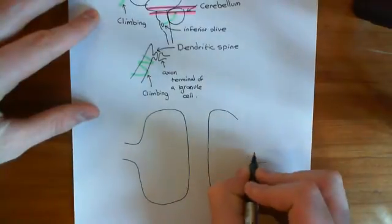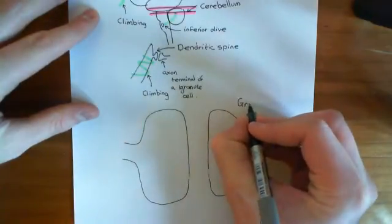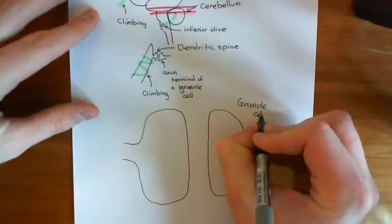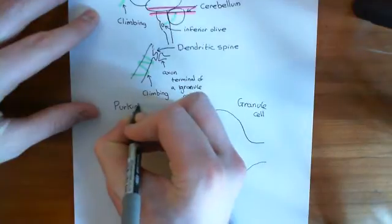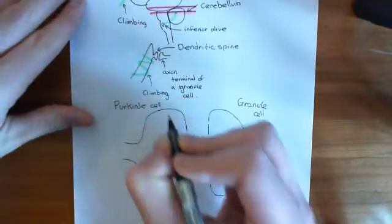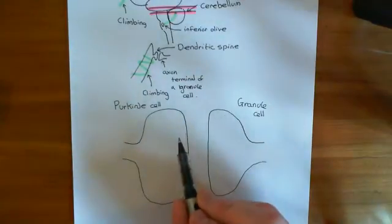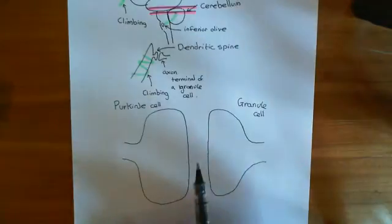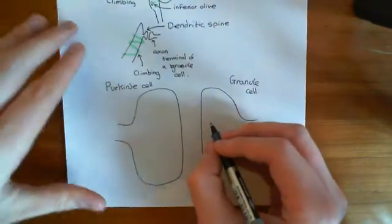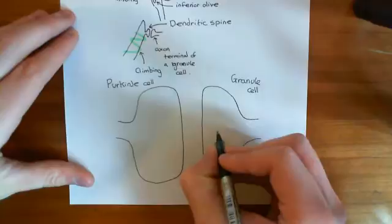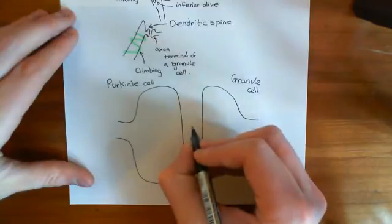The axon terminal of this granule cell is going to release glutamate. So this is the granule cell, and here is the Purkinje cell. The granule cell is going to release the neurotransmitter glutamate into the synaptic cleft. Now, you might expect the Purkinje cell to have ionotropic glutamate receptors, but it doesn't — it has metabotropic glutamate receptors of the first type.